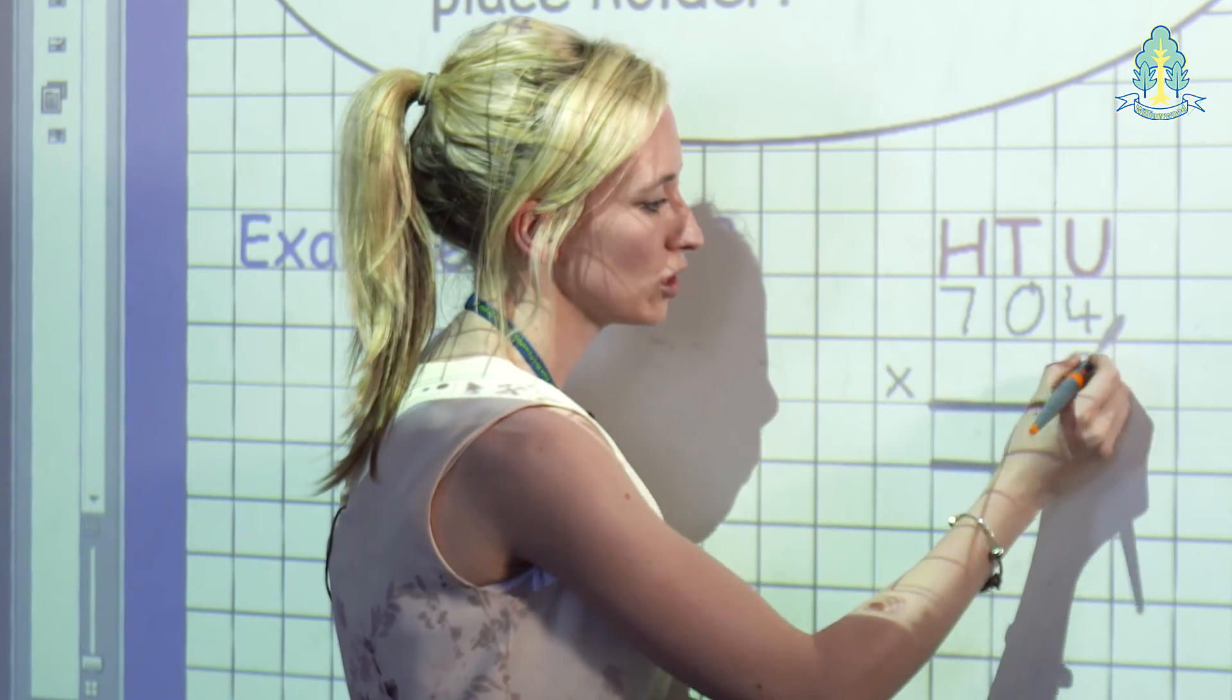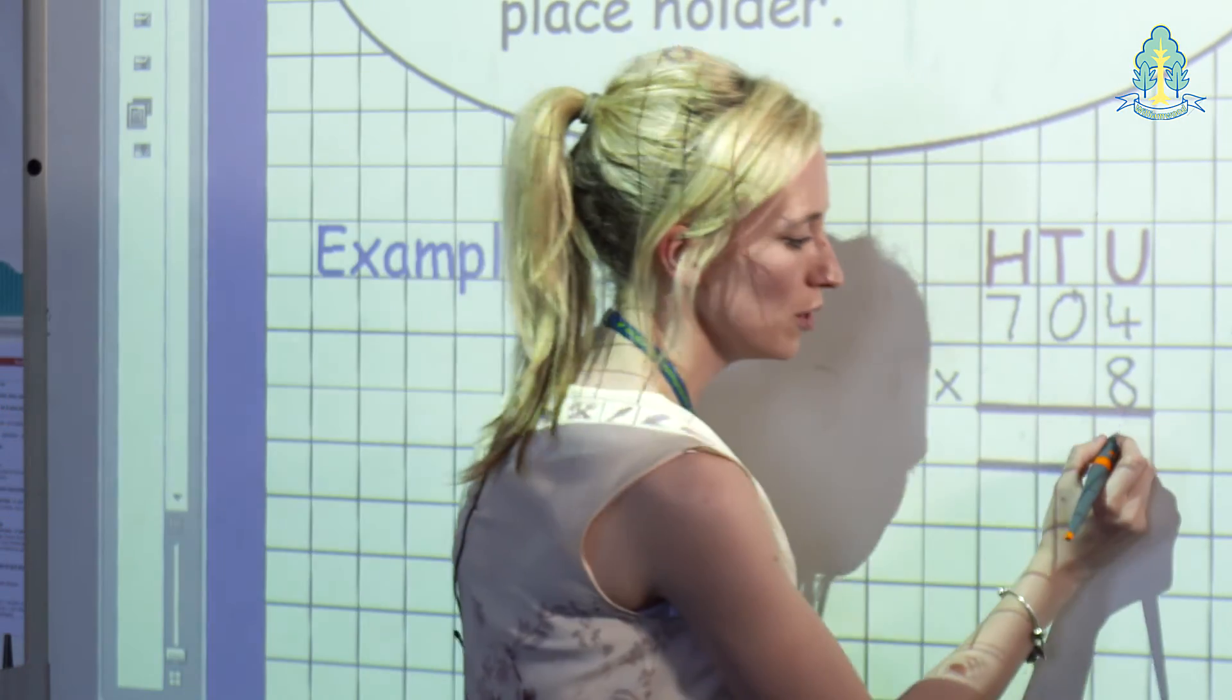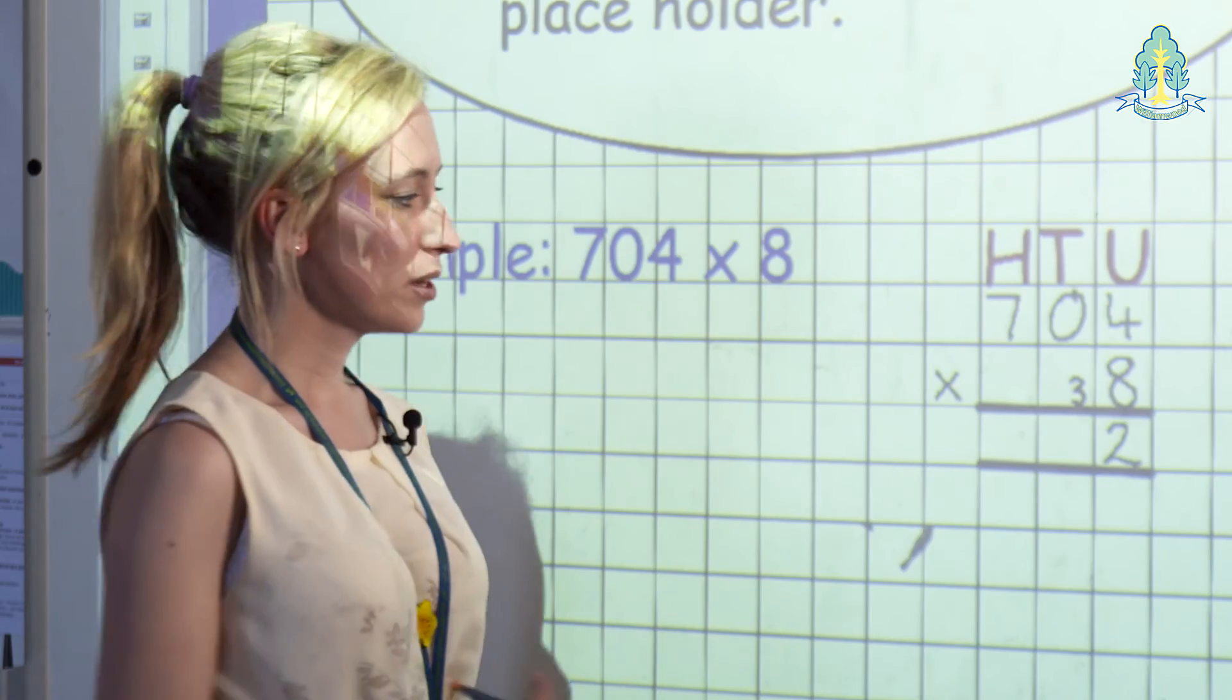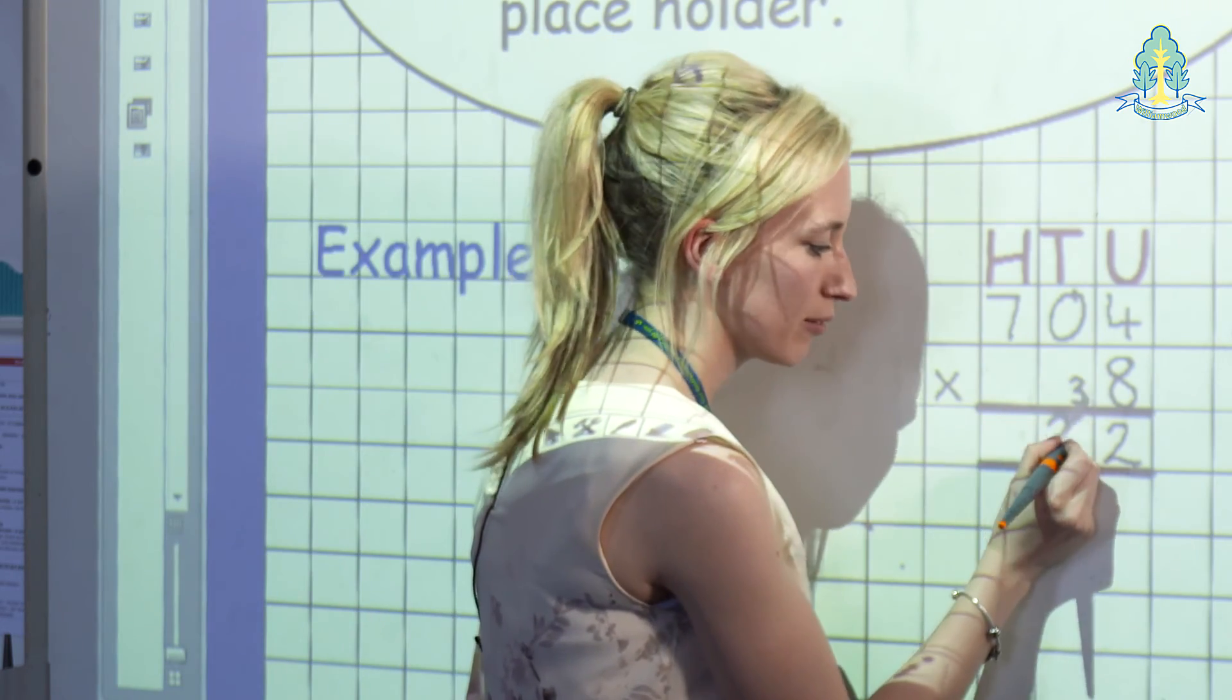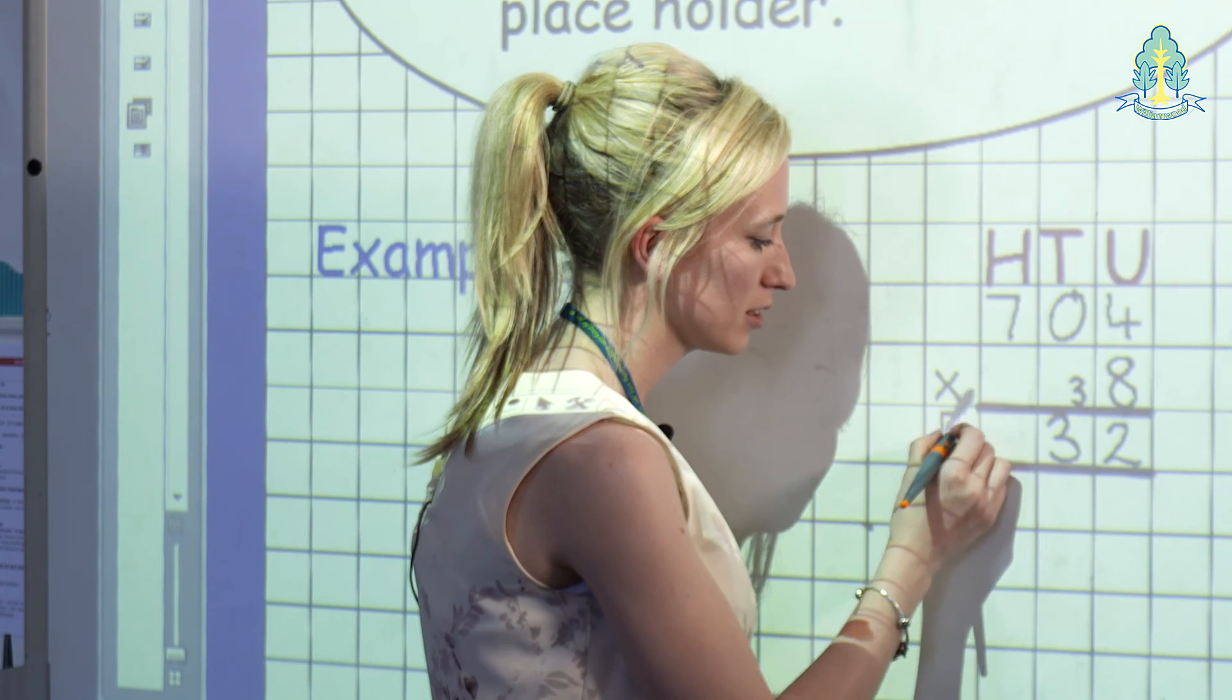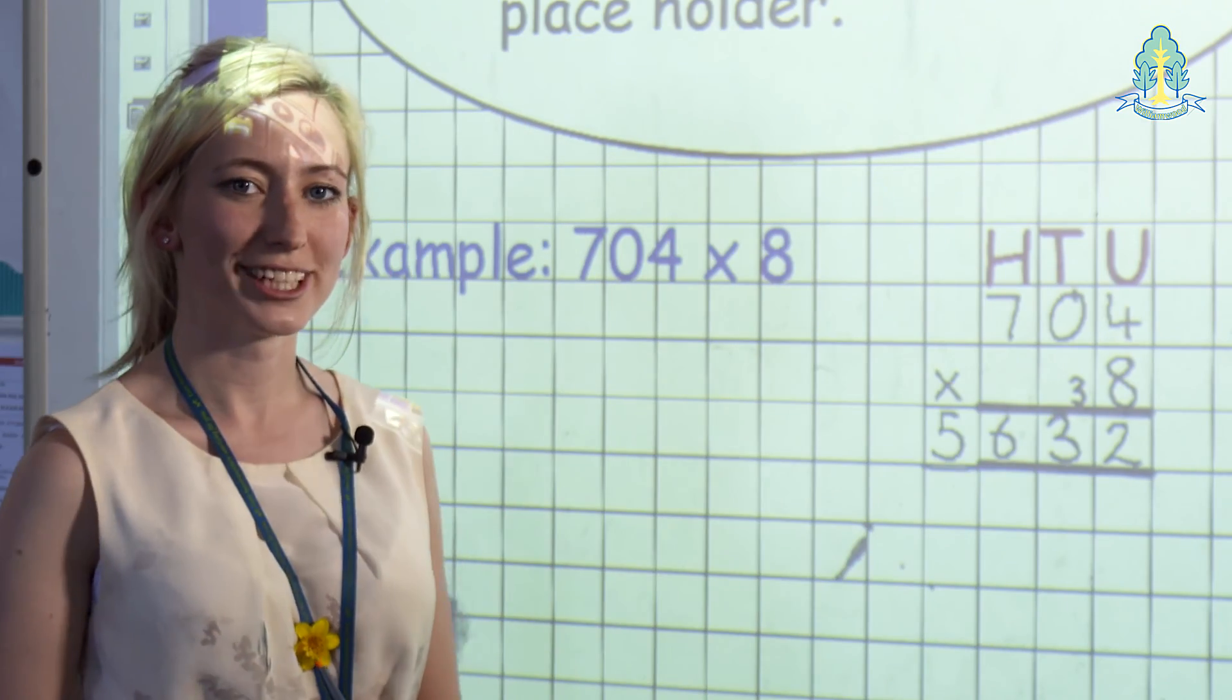Beginning on the right-hand side we have 8 times 4 is 32, putting down their units and carrying their 3. 8 times 0 gives the child 0, but they must remember to carry on their 3. So 0 plus 3 gives them 3 tens. And lastly they have their hundreds column of 8 times 7 which is 56. Encouraging the child again to ensure the numbers are in their own column and just extending their lines if they need to.